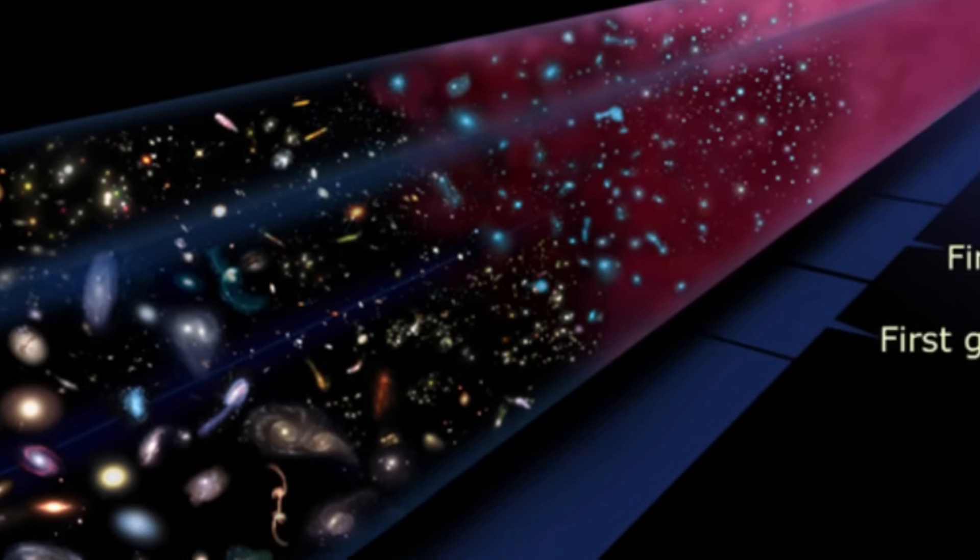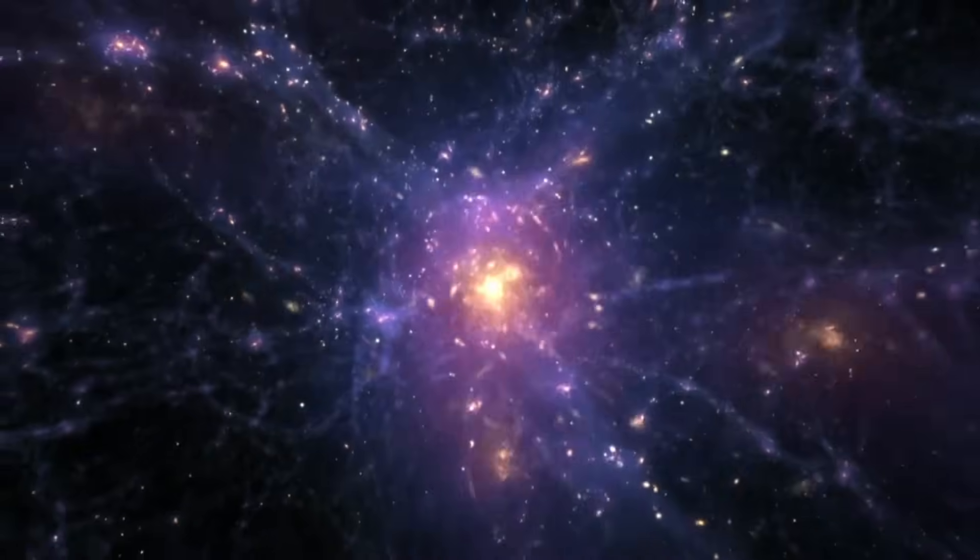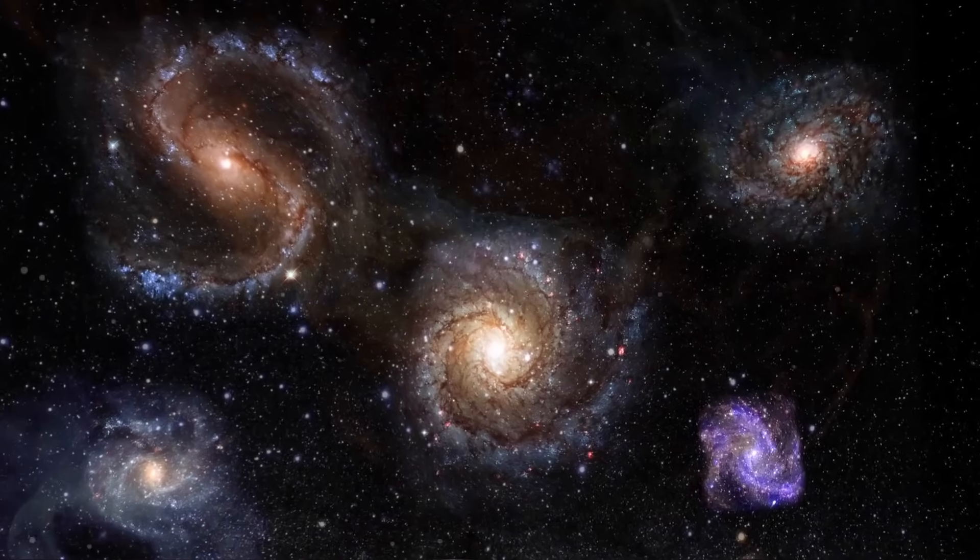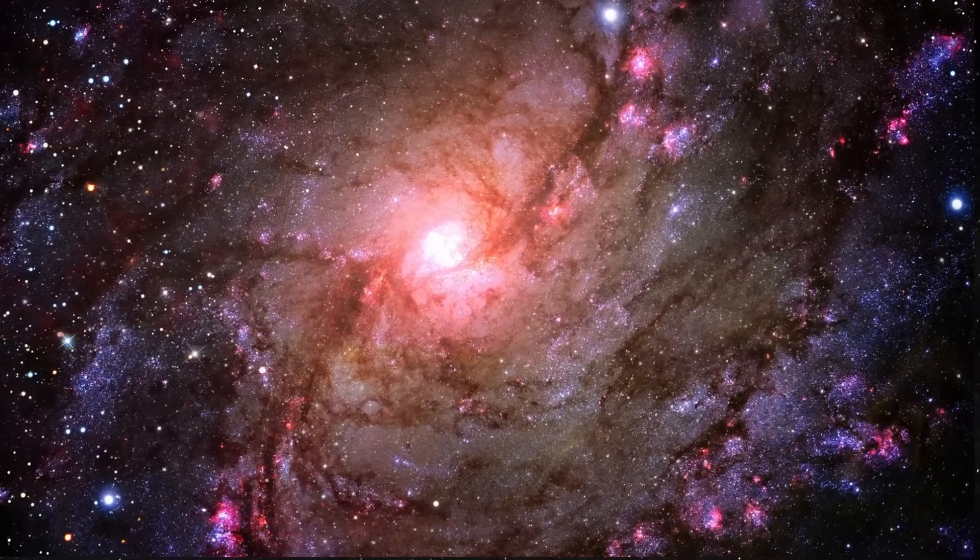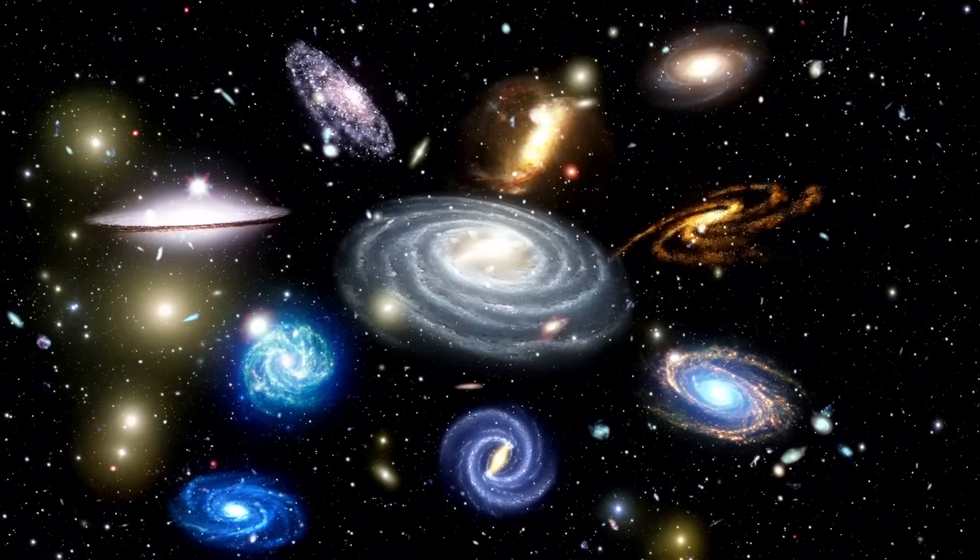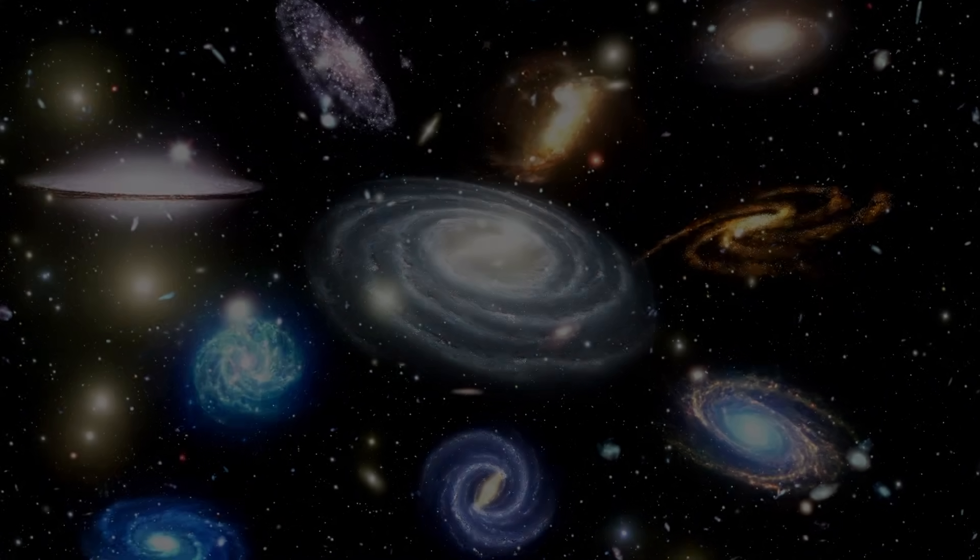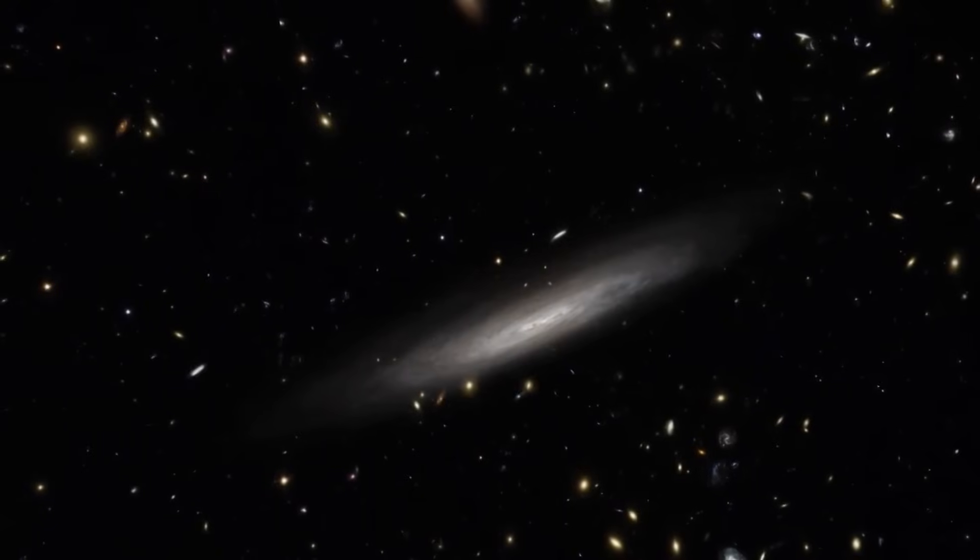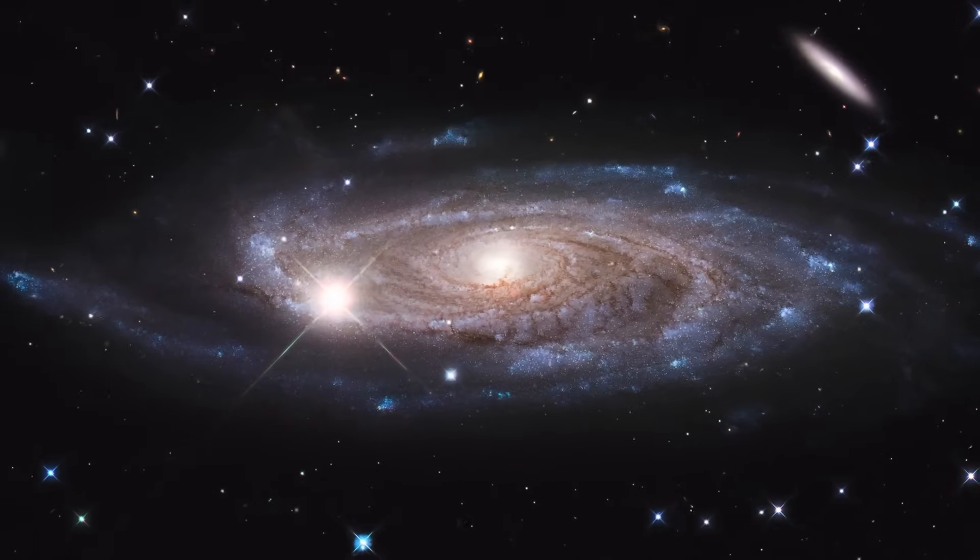These shapes also reflect the different stages of galaxy evolution, from the initial collapse and fragmentation of gas to the formation and growth of disks and bulges, to the final assembly and transformation of galaxies. By studying the shapes of distant galaxies in the early universe, we can learn more about the physical processes that shaped them and how they changed over time. We can also compare them with the shapes of nearby galaxies and see how they are related or different. This can help us to understand the origin and evolution of galaxy shapes and how they are connected to other properties of galaxies, such as their mass, luminosity, color, and morphology.